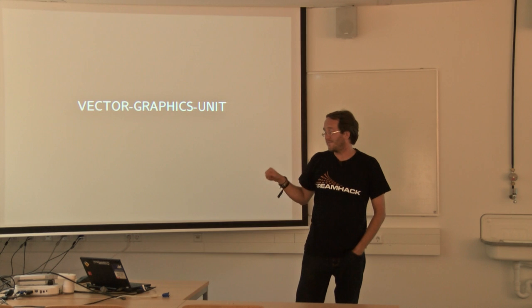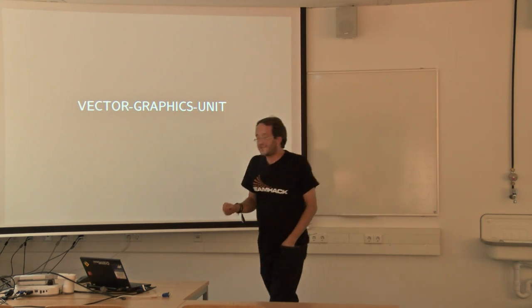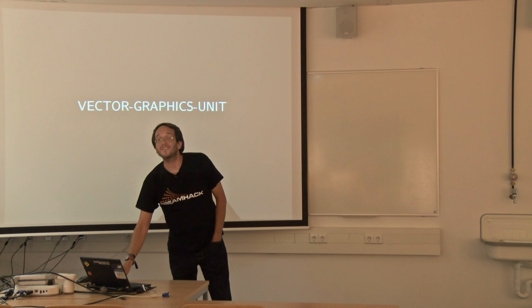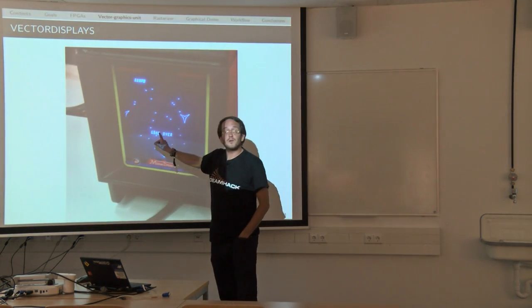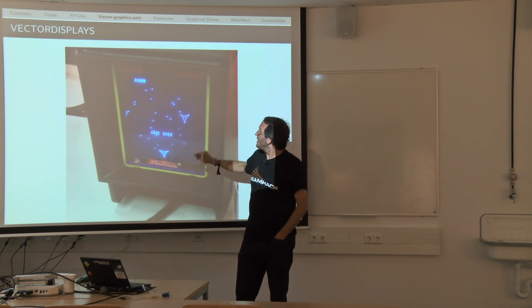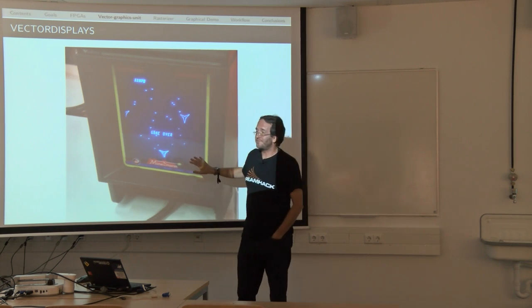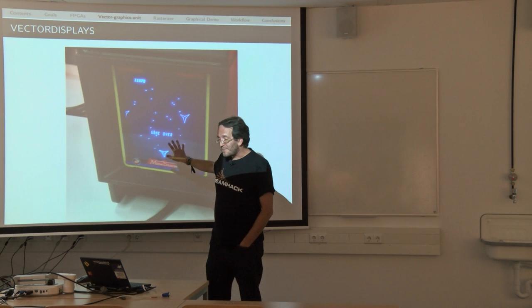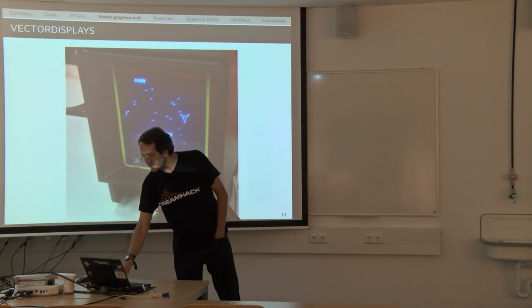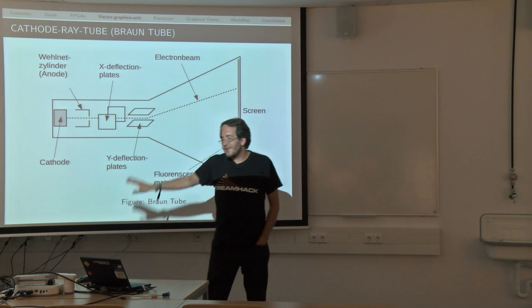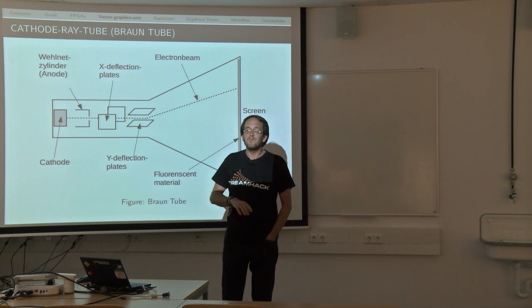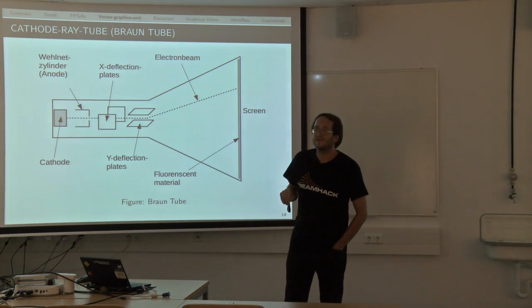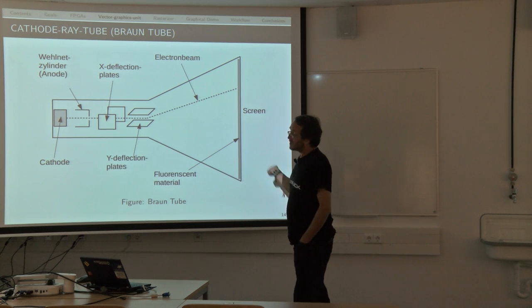So far about FPGAs. The vector graphics unit. Let's talk about what is a vector display before we get to the vector graphics unit. That is a vector display. This photo I took at the Gamescom in Cologne this year. It's a Vectrex console from 1983. Inside that there is a cathode ray tube, that was invented by Ferdinand Braun in 1897, which is quite long ago. This whole thing is a glass tube with a vacuum in it.